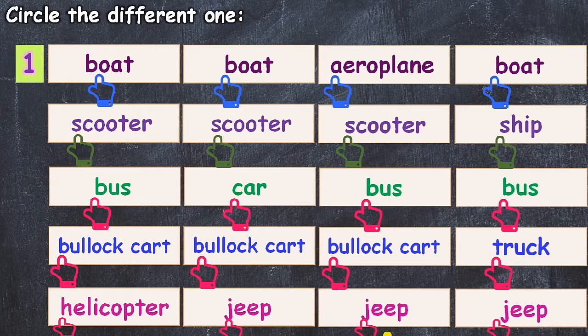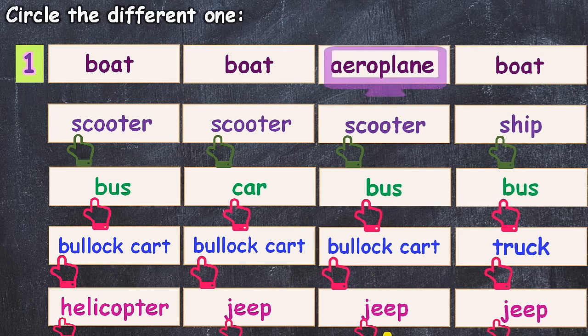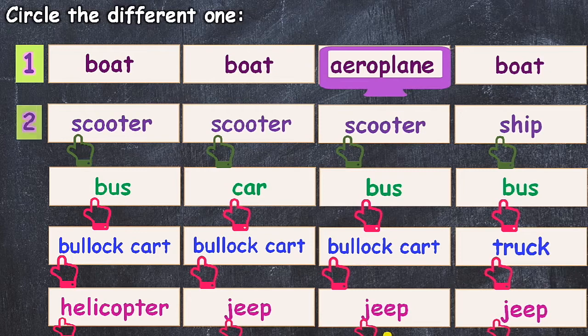First one, boat, boat, aeroplane, boat. Aeroplane is the different one in first one.